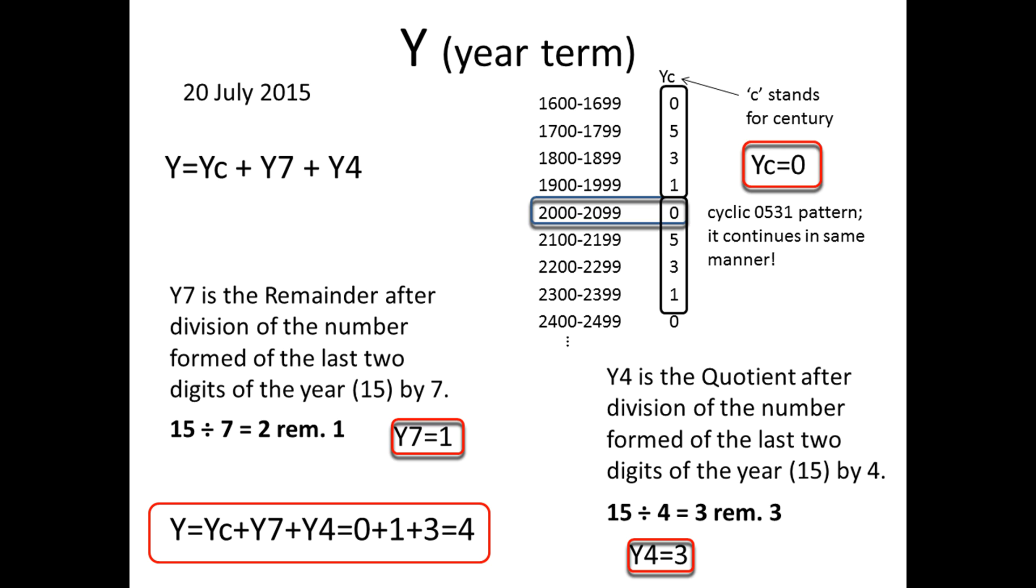For obtaining Y7, it is necessary to subtract multiples of 7 in the same way as you did with the day term, which is same thing as obtaining the remainder after division of the year by 7. It is important for calculation of Y7 and Y4 that you only have to consider the last two digits of the year. For 2015 Y7 equals 1.